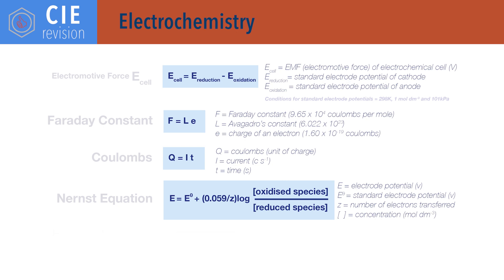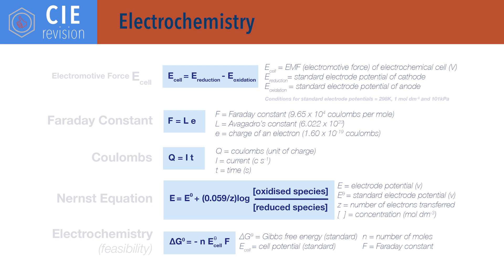Delta G standard equals minus n times E cell standard times F, where delta G standard is change in Gibbs free energy under standard conditions, n is number of moles, E cell is cell potential under standard conditions, and F is the Faraday constant — 9.65 times 10 to the 4 coulombs per mole.